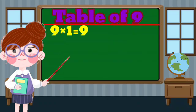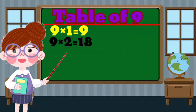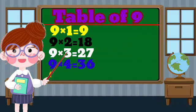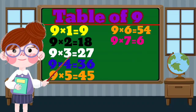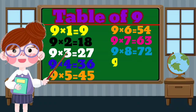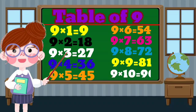9 times 1 equals 9. 9 times 2 equals 18. 9 times 3 equals 27. 9 times 4 equals 36. 9 times 5 equals 45. 9 times 6 equals 54. 9 times 7 equals 63. 9 times 8 equals 72. 9 times 9 equals 81.